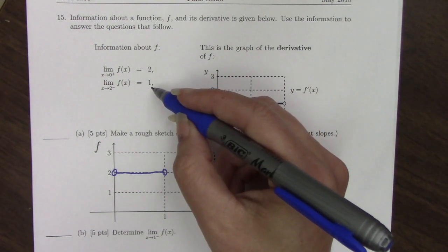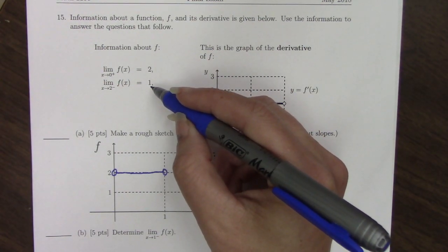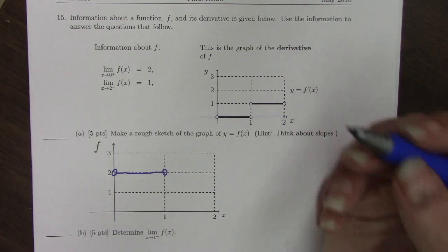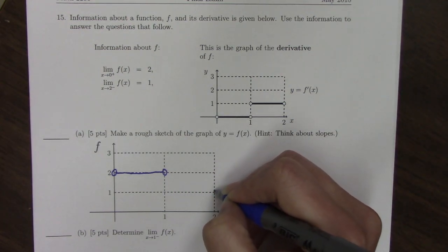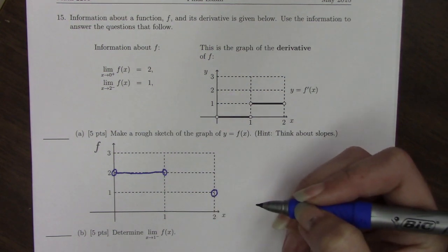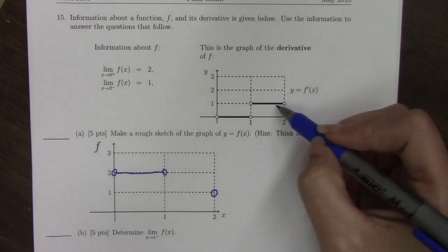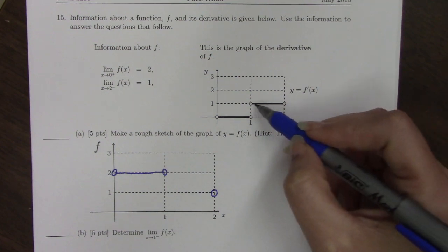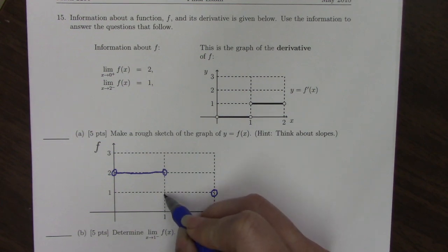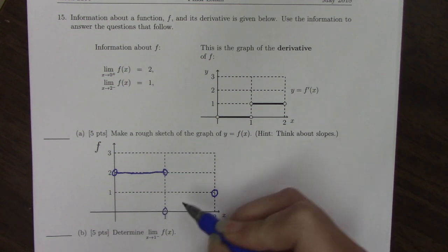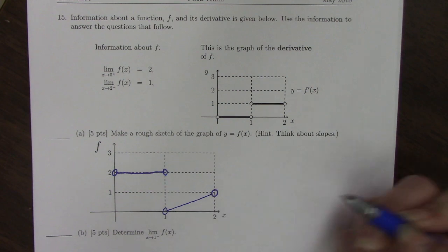The next limit says that as we go to 2 from the left, the y value is 1. So here's 2. If I'm coming in from the left, the function should be hitting the value 1. But then the derivative graph tells me the slope of this line is 1 everywhere. So if I do rise over run, up 1 over 1, my line should come like this.